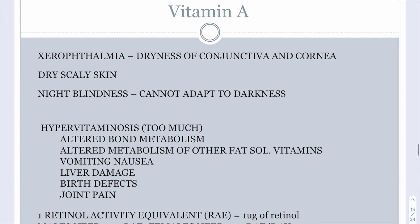Vitamin A deficiencies include xerophthalmia — dryness of the conjunctiva and cornea — associated with inflammation, dry scaly skin, and night blindness, meaning the inability to adapt to darkness. Too much vitamin A, or hypervitaminosis A, is also problematic since it is a stored fat-soluble vitamin. Excess vitamin A takes up storage space, alters metabolism of other fat-soluble vitamins, can induce vomiting and liver damage, and has been associated with birth defects.